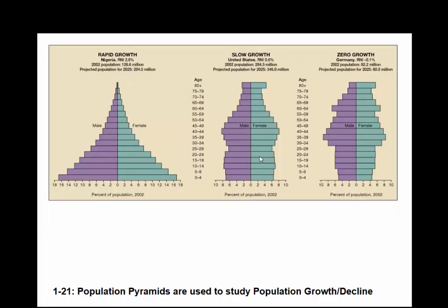We can look at population pyramids to express the dynamics of population growth and decline. The y-axis is age versus population. You can see a high percentage of people at lower ages for high-growth countries. For the United States — this is from 2002 — you can see our baby boomers. This is Germany, where the rate of natural increase is actually going down and more people are dying every day than being born.